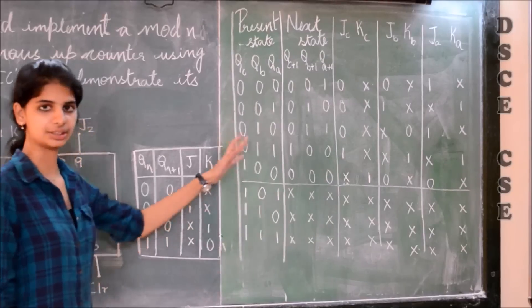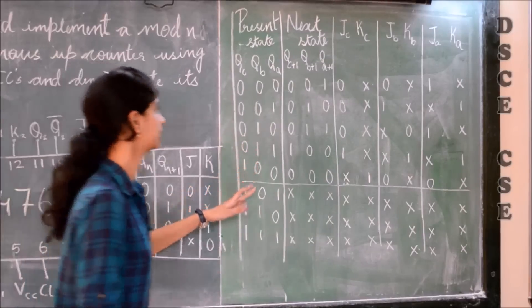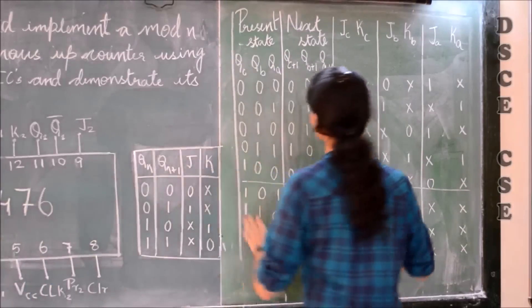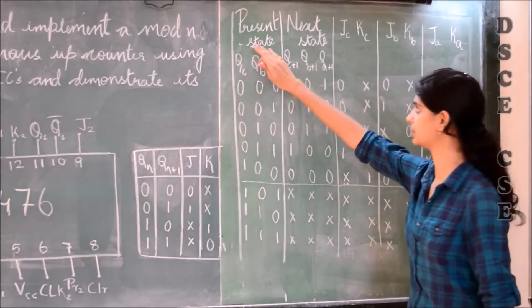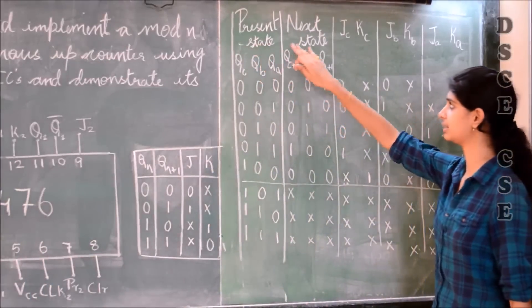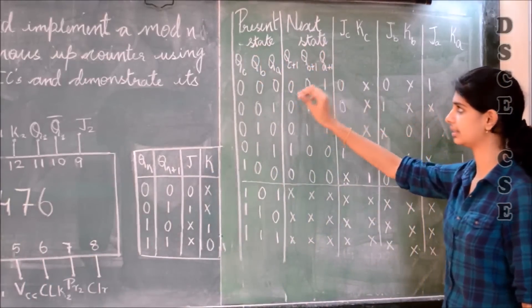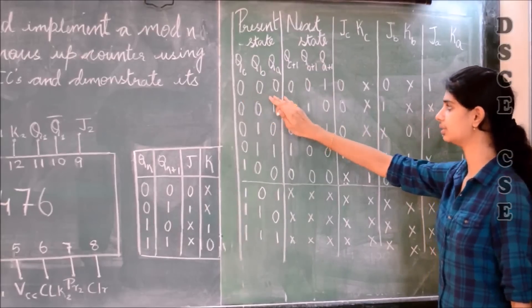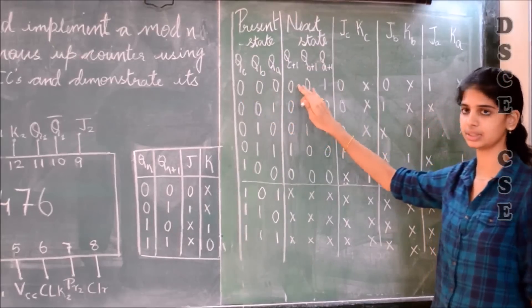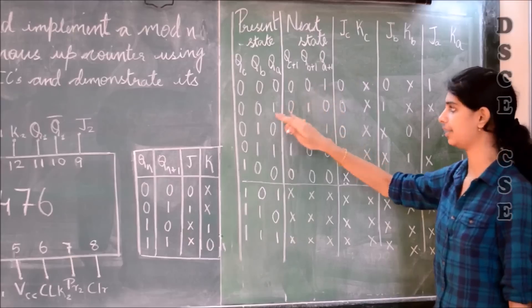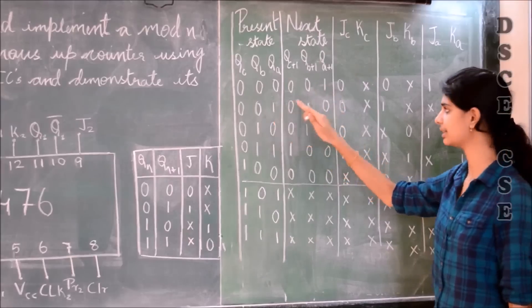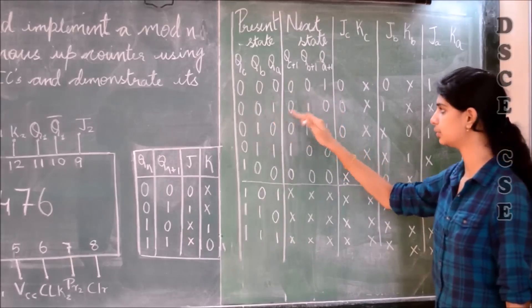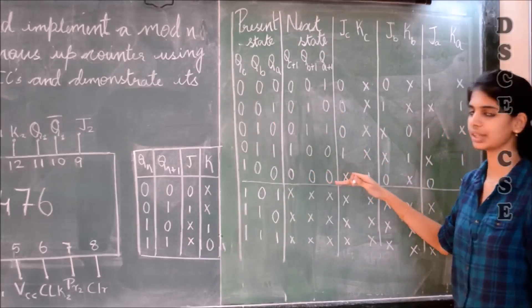Now let us draw the transition table. The transition table will be between two states, the present state and the next state. The present state 000 transitions to next state 001. For 1, the next state is 2; for 2, it's 3 and so on.